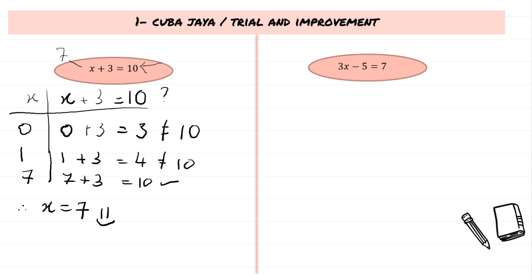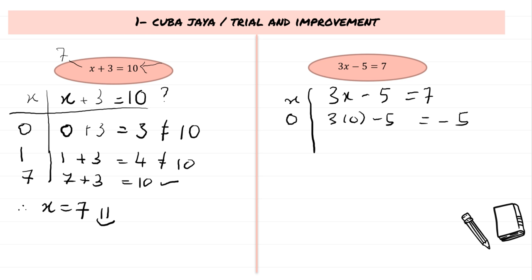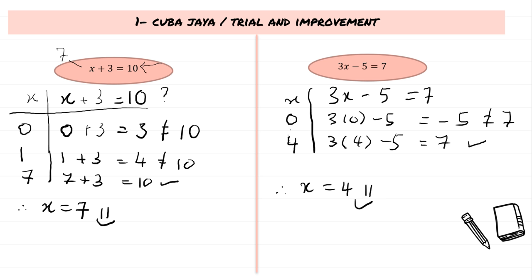For the second example using trial and improvement: 3x − 5 = 7. We try x = 0: 3(0) − 5 = −5, which is not equal to 7. We then try x = 4: 3(4) − 5 = 12 − 5 = 7. We get the answer, so x = 4.